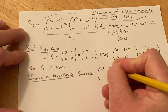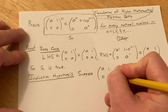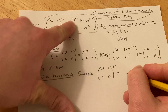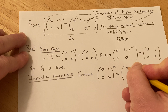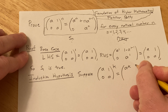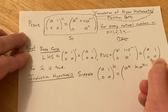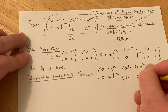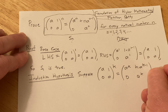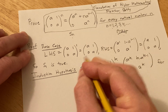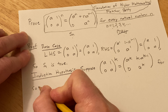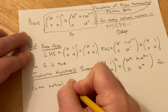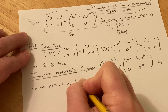So we have the matrix A, 1, 0, A to the k, and we're assuming it's equal to the matrix with k's everywhere: A to the k, k times A to the k minus 1, 0, A to the k — for some natural number k.